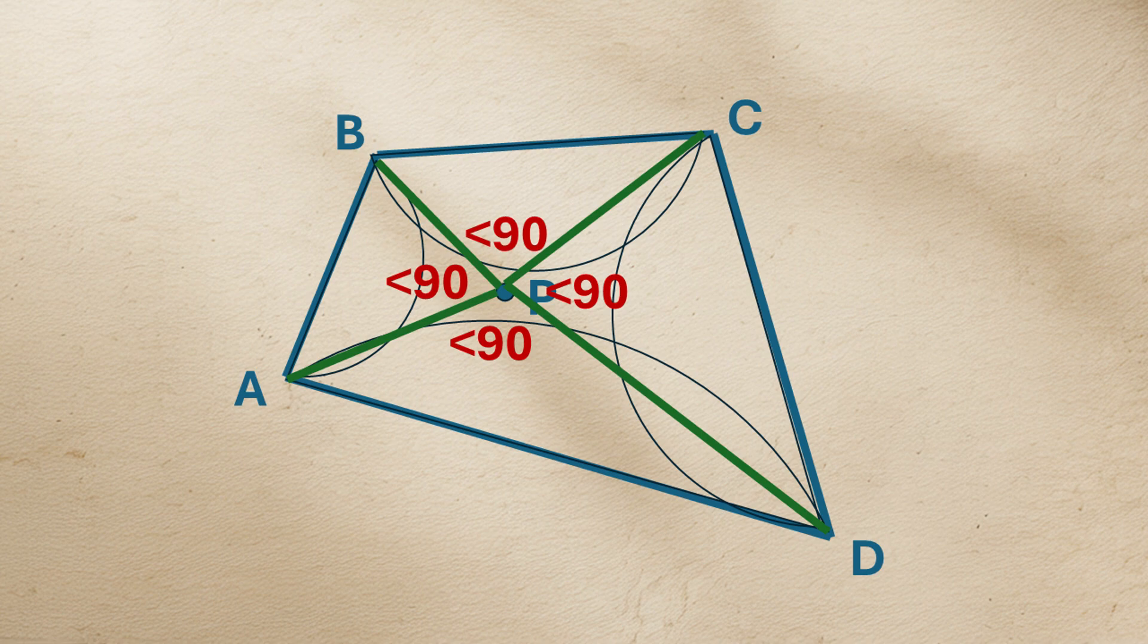Adding these gives angle APB plus angle BPC plus angle CPD plus angle DPA is strictly less than 360 degrees.